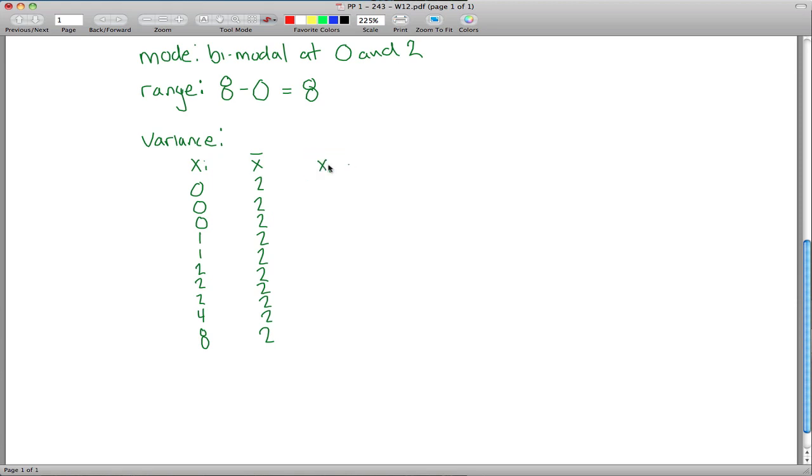And your next column is, okay, how far away is each observation from the mean, which is kind of what this is saying. This guy minus this guy, 0 minus 2 is negative 2. 1 minus 2 is negative 1, 2 minus 2 is 0, 4 minus 2 is 2, and 8 minus 2 is 6. And the next column comes from the fact that, okay, if we added all these up, it wouldn't really help, we'd just get 0, that's always going to happen, it's a property of the mean.